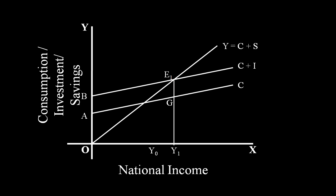Take income level Y0, which is less than equilibrium income Y1. Aggregate Demand is Y0E0, and Aggregate Supply is Y0K. Thus, Aggregate Demand exceeds Aggregate Supply.